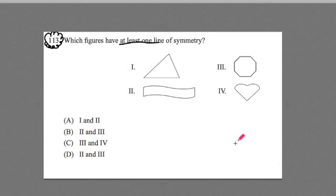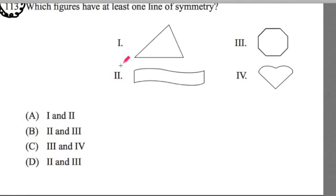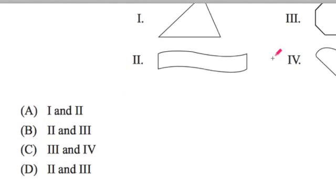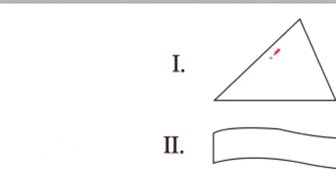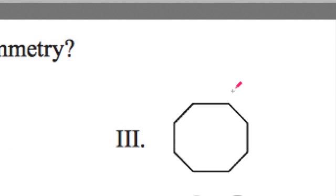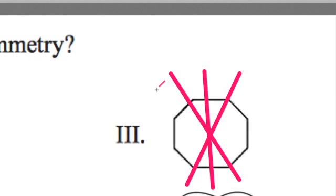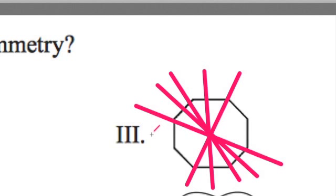Now we're going to get to the problem at hand: which figure has at least one line of symmetry? Let's start with our octagon. I think everyone agrees that we could draw a line here — there's one line of symmetry. There's another line of symmetry. We've got another line here, and we could keep going. An octagon has something like eight lines of symmetry.